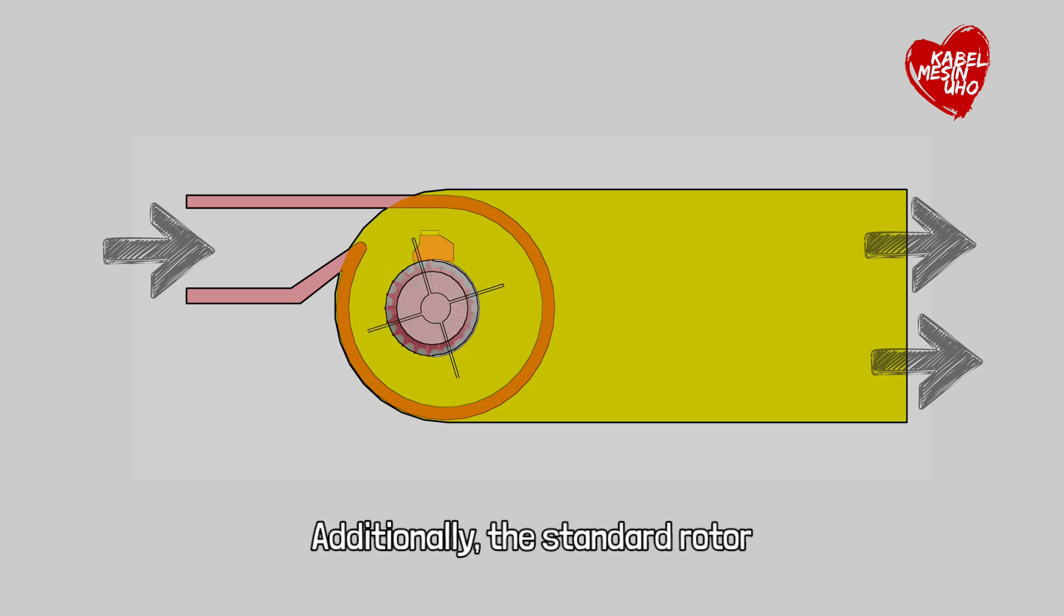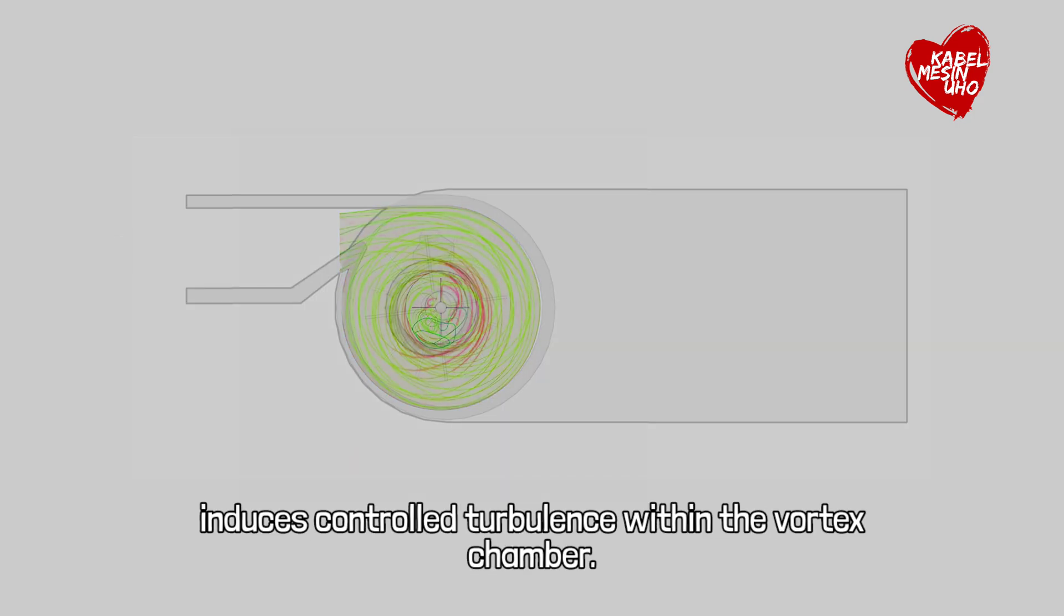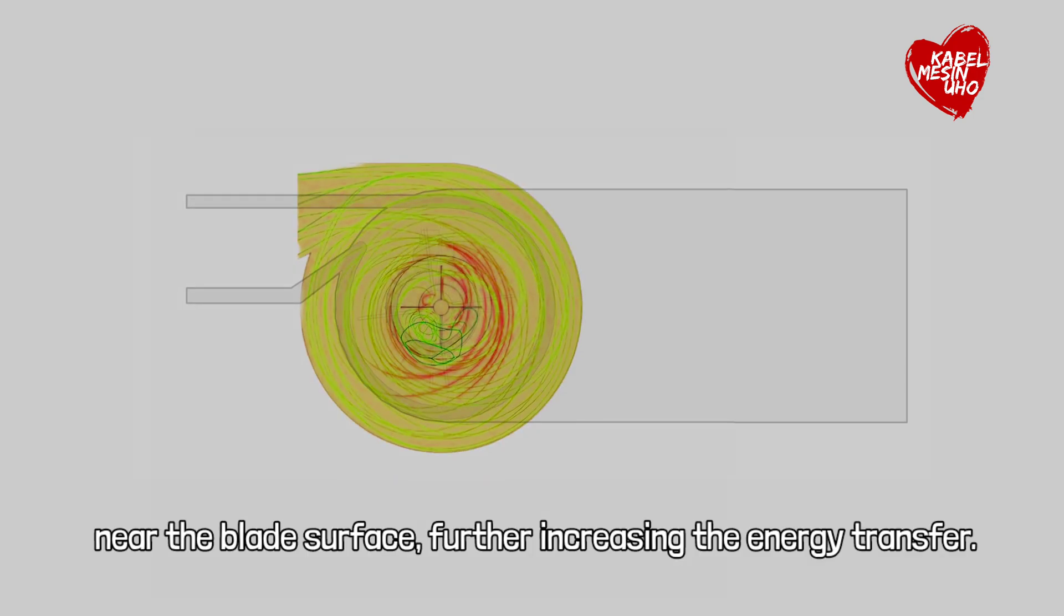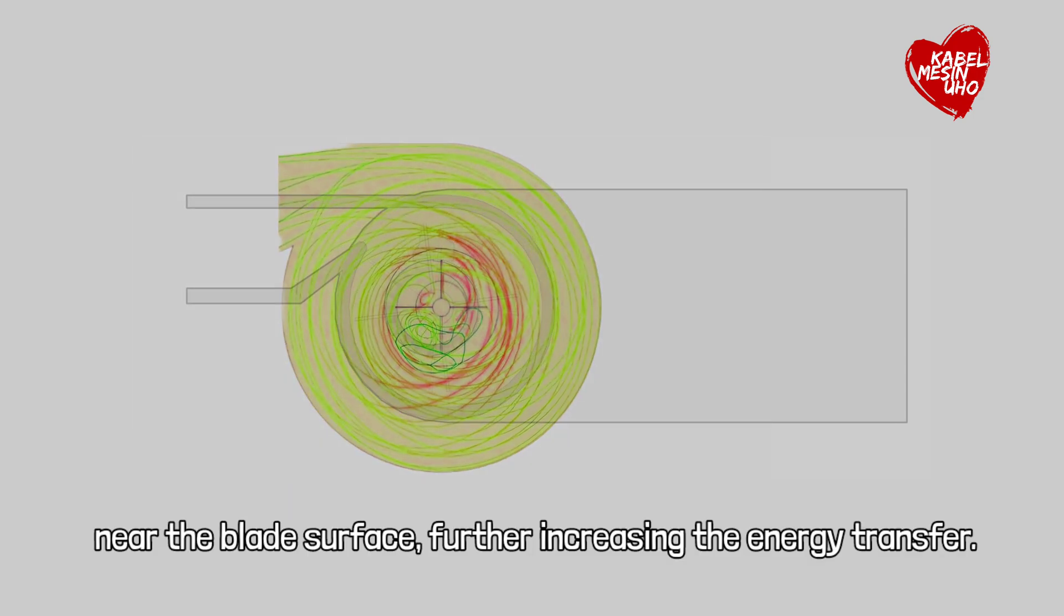Additionally, the standard rotor induces controlled turbulence within the vortex chamber. This turbulence enhances the water velocity near the blade's surface, further increasing the energy transfer.